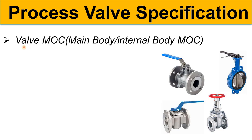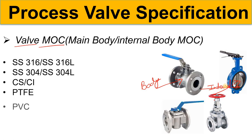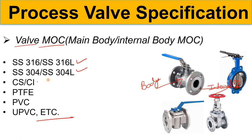The next information given in the Process Valve Specification is valve MOC — Material of Construction. For a ball valve, for example, you will give information about the body MOC and internal body MOC. This will help the piping department to prepare their MTO and purchase the valve. The body MOC or internal body MOC could be SS316, SS316L, SS304, SS304L, carbon steel, cast iron, PTFE, PVC, or UPVC. The valve MOC depends on the service fluid being handled.